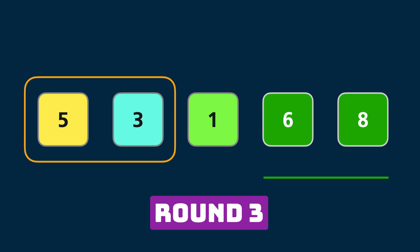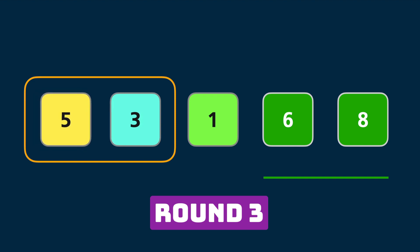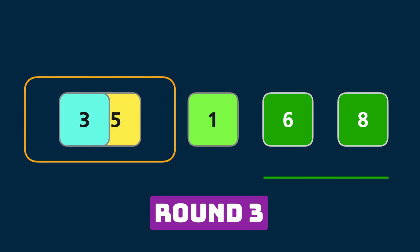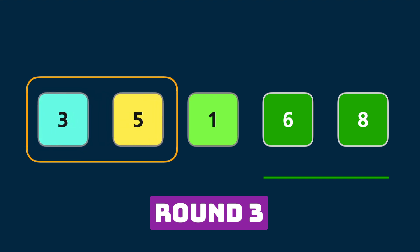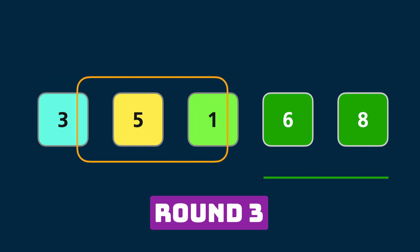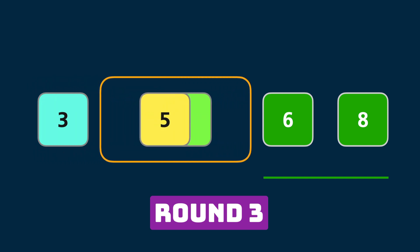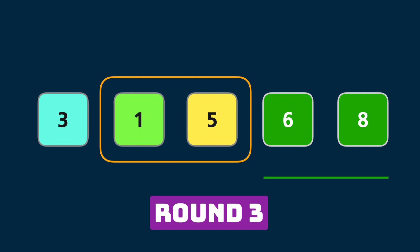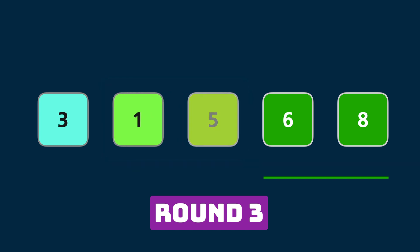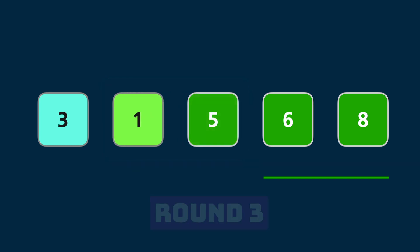Round three. First pair: five and three — we change the order of the elements. Second pair: five and one — again we swap those two elements. And round three is over. Now three elements — five, six, and eight — are in their correct positions.